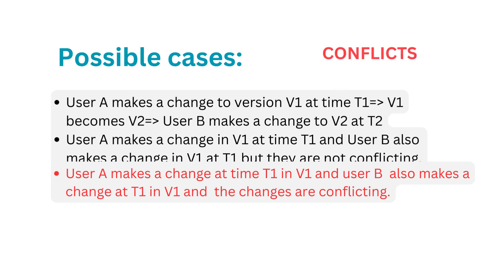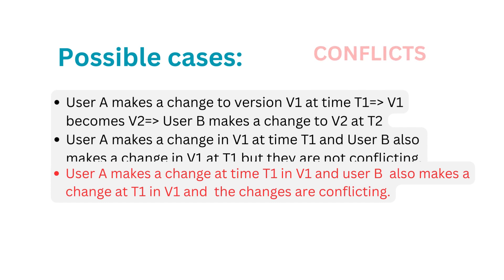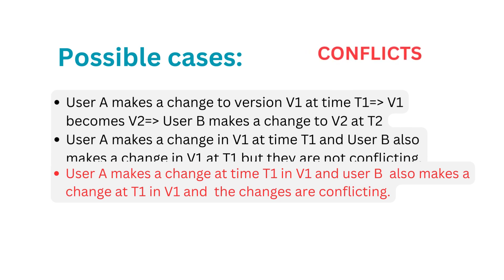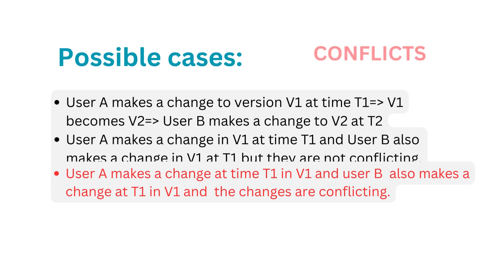The third case is when user A makes a change at T1 in version V1 and user B also makes a change around the same time in version V1, and the changes are conflicting — maybe they added to the same element, the same word, or the same line. These are conflicting changes. Let's understand this a bit more.